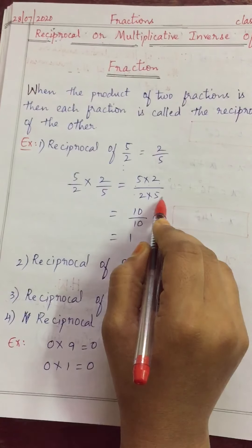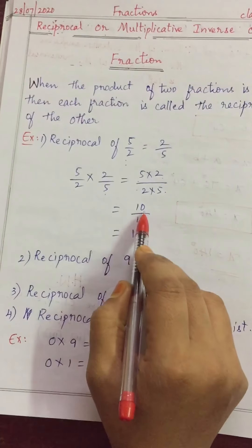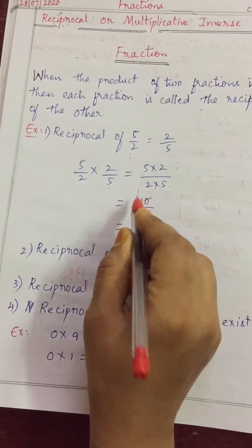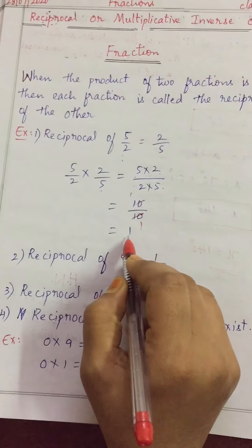5 into 2 by 2 into 5. Numerator into numerator, denominator into denominator. 5 times 2 is 10, 2 times 5 is 10. We can cancel this 10 over 10 because same is there. 10 once 10, 10 once 10. So, answer is 1.